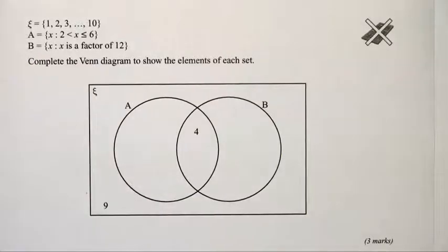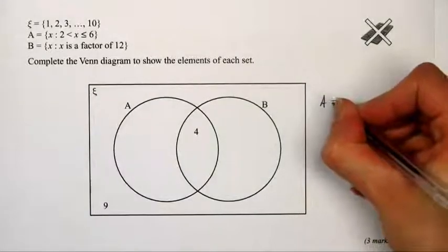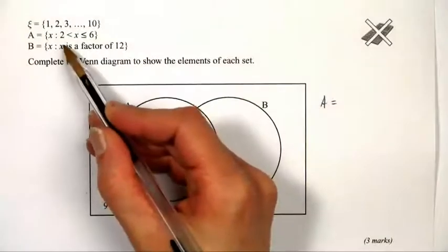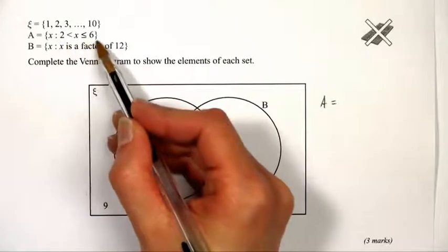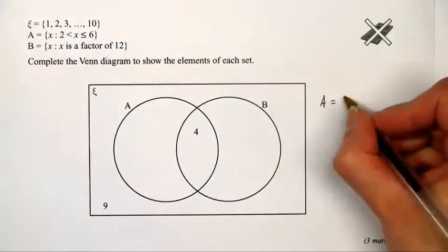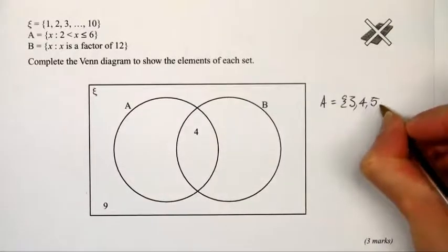The first thing to do is write out the elements of set A and set B. Set A is numbers between 2 and 6, not including 2 but including 6 because of the inequality symbols, so that's 3, 4, 5, and 6.